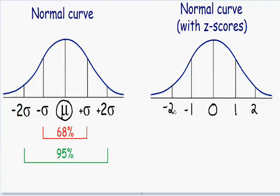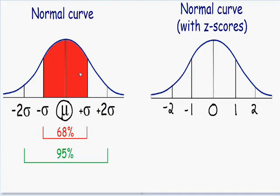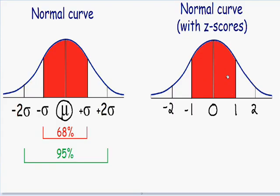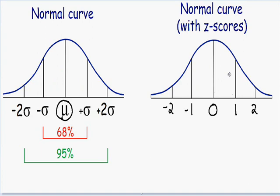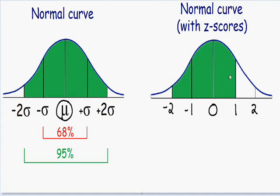If you remember from my previous video, we know from the empirical rule that 68% of the data lies within one standard deviation. The same concept applies for z-scores — 68% of the data, or 68% of the area under the curve, is between z-scores negative 1 and positive 1. The empirical rule also tells us that 95% of the area under the curve is within two standard deviations, so 95% of the data is between z-scores negative 2 and positive 2.